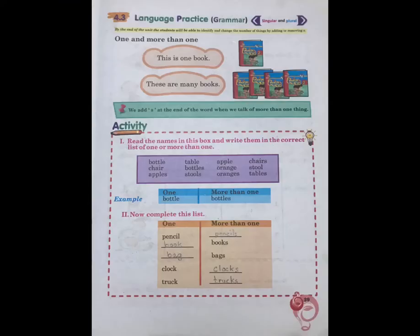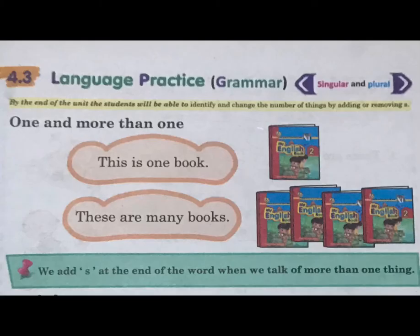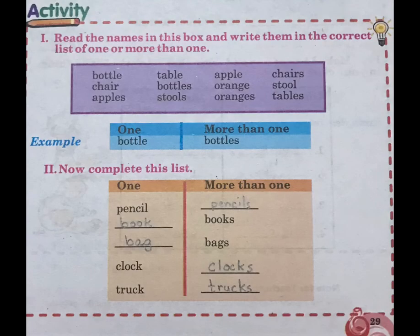Now look at page number 29. Section 4.3 Language Practice: One and more than one. This is one book; these are many books. We add S at the end of the word when we talk of more than one thing. Activity: Read the names in the box and write them in the correct list of one or more than one. Bottle, table, apple, chairs, chair, bottles, orange, stool, apples, stools, oranges, table.